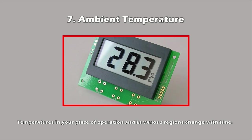Ambient temperature is another factor to consider. As temperatures increase in various regions, conditions that were ideal for air compressors just 20 years ago could now require some adjustments. If climate trends have rendered summer months far hotter in your local area, the time has likely come to boost the air conditioning in the workspace that houses your compressed air system.